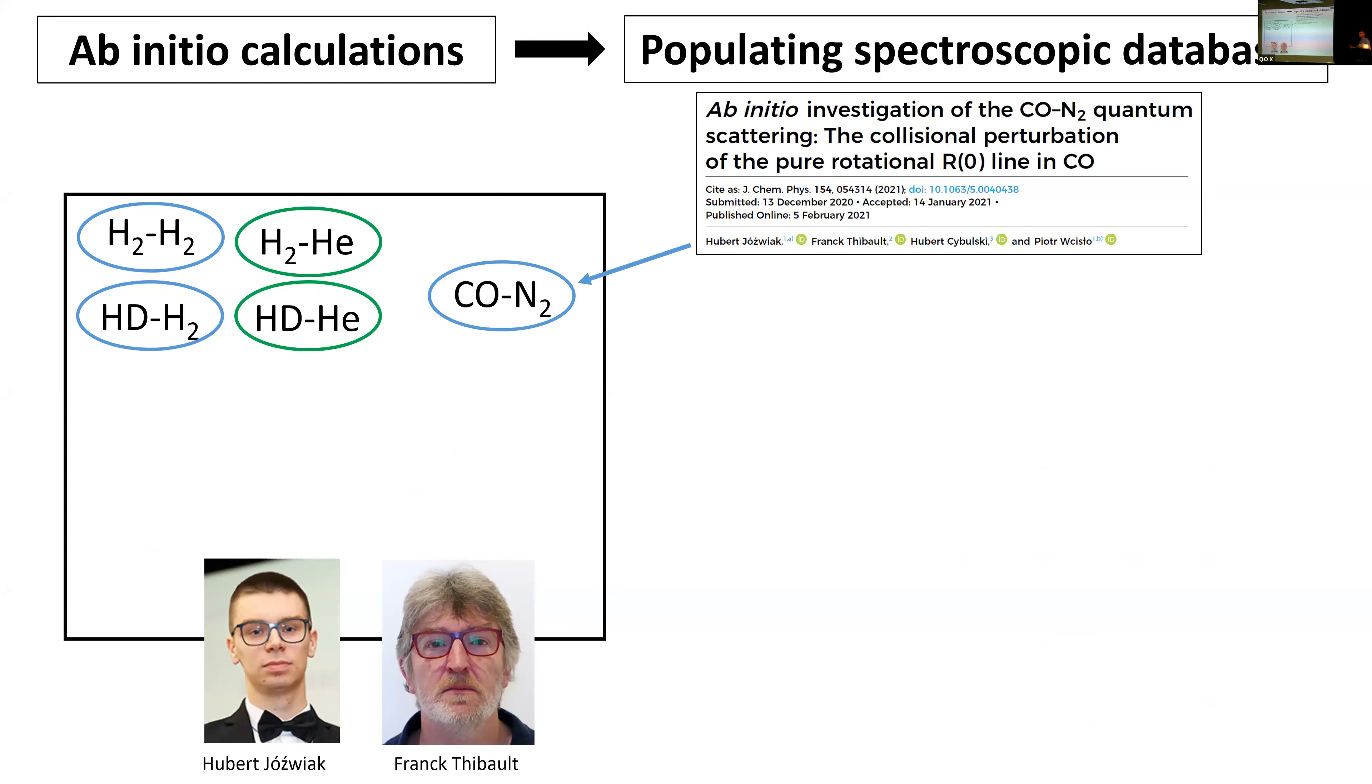Now we have ambition to go further and address the same problem but for more important molecular systems. We started with CO-N2. To give you a feeling how much more expensive computationally this system is, here the vertical axis is almost the number of partial waves that contribute to the collision as a function of energy. For CO molecule, it is orders of magnitude larger in the number of partial waves we need to consider. Then we need to consider that N2 has its own rotational structure, so we have to repeat calculations for every state of the perturber.